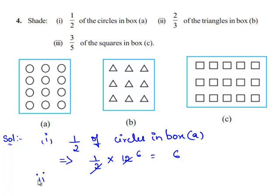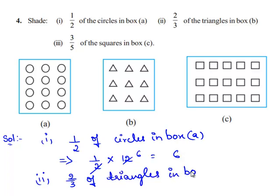Now let us find 2 by 3 of the triangles in box B. So 2 by 3 times the total number of triangles in box B. The total number of triangles in box B are 9, therefore we have 2 by 3 times 9.